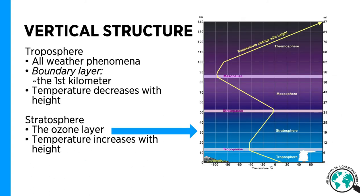Let's next take a look at the vertical structure of the atmosphere. The lowest approximately 10 kilometers of the atmosphere are called the troposphere. It is where all the weather phenomena happen, like clouds, precipitation, and winds. The very first kilometer of the troposphere is called the planetary boundary layer. It is the layer that is directly influenced by the surface of the Earth.